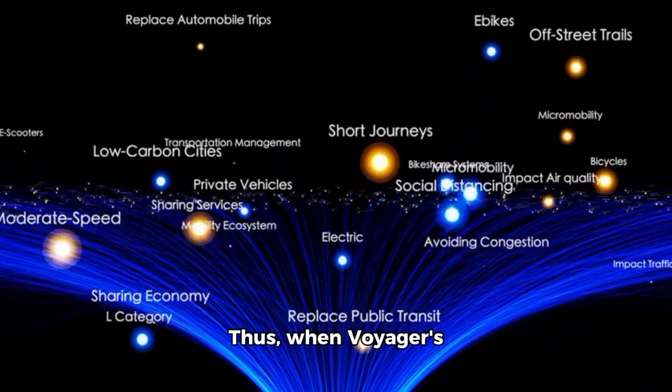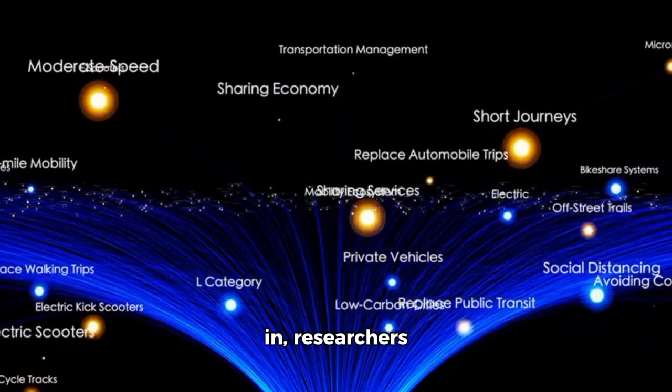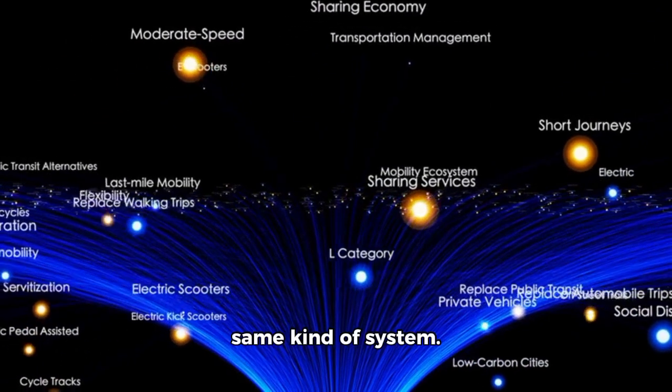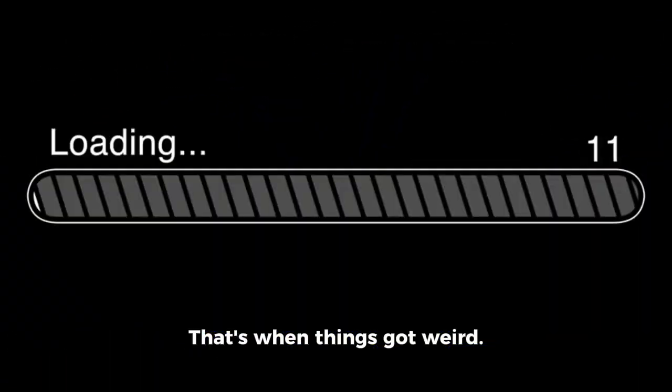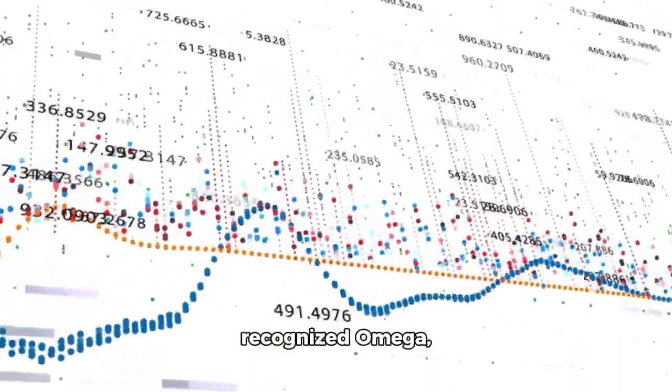Thus, when Voyager's strange data stream came in, researchers incorporated it into the same kind of system. That's when things got weird.